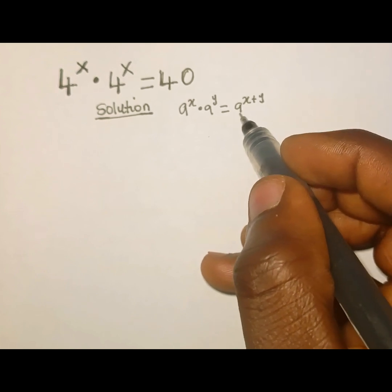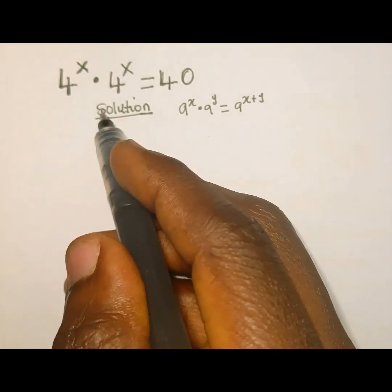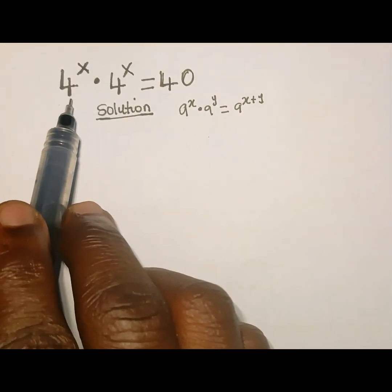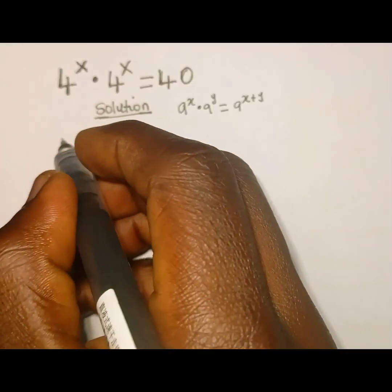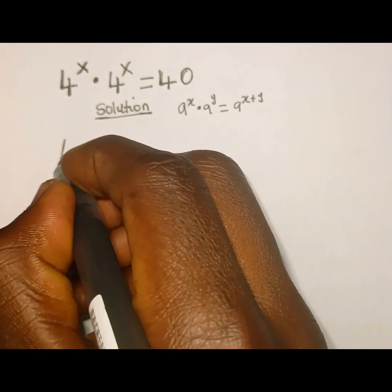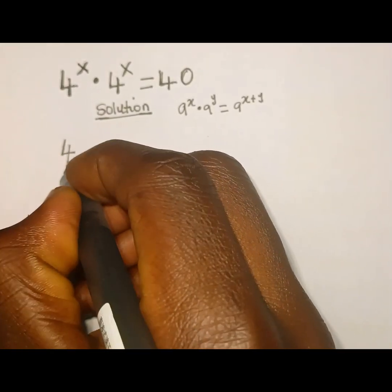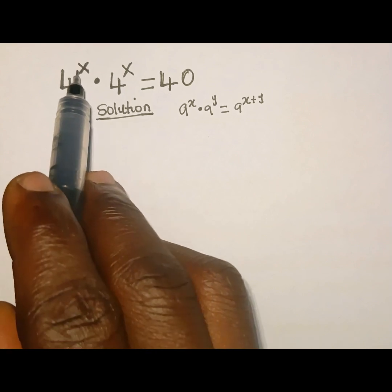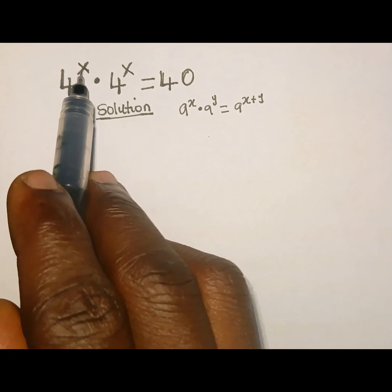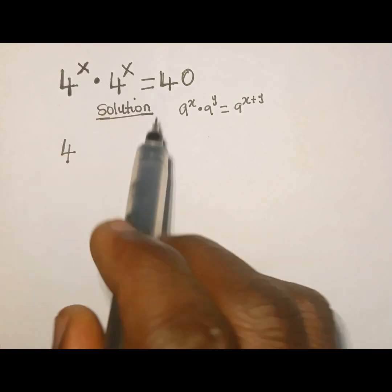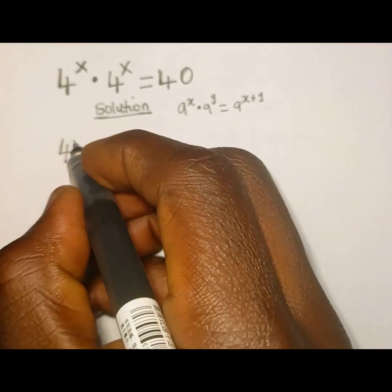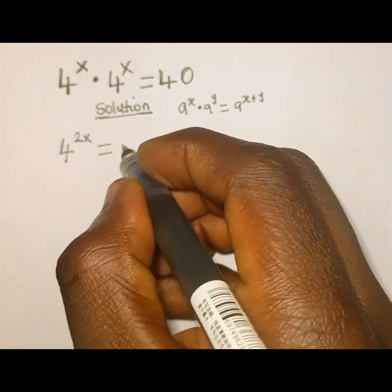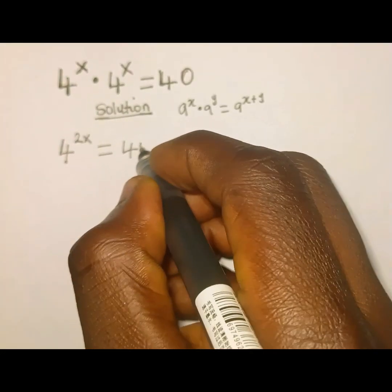We are going to apply this property to the left hand side of this equation. As you can see, the bases are both 4, so all we need to do is write one of the bases which is 4, then add the powers. The first power is x and the second power is x, so x plus x gives us 2x. So everything will be equal to 40.